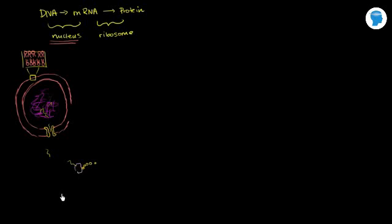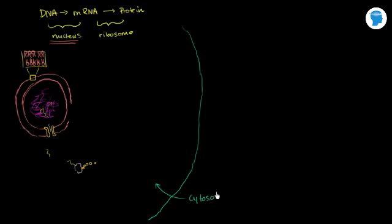But this is not the complete picture, because when you translate a protein using a free ribosome, this is for proteins used inside the cell. The free ribosome translation produces proteins that float around the cytosol. Note that cytosol is all the fluid between the organelles, while cytoplasm is everything inside the cell — the cytosol, the organelles, and the stuff inside the organelles.